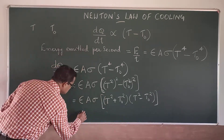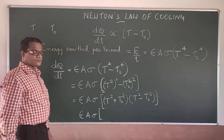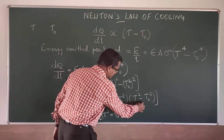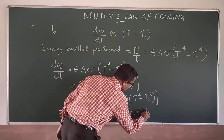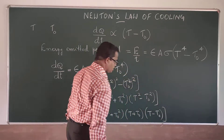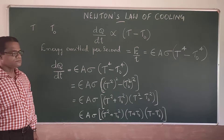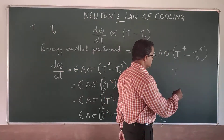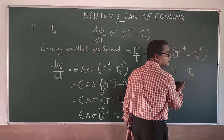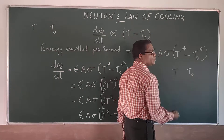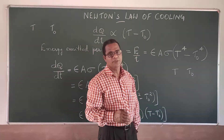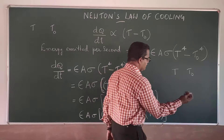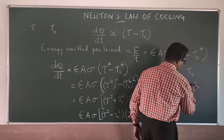This expression can again be written as ε × A × σ × (T² + T₀²) × (T + T₀) × (T - T₀). Now, suppose the temperature of the body and the surroundings are very close to each other — the difference is very small.